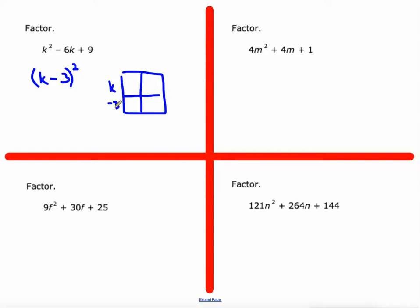K minus 3 times k minus 3 would give us k squared minus 3k minus 3k plus 9, which is k squared minus 6k plus 9. So it's going to work every single time.